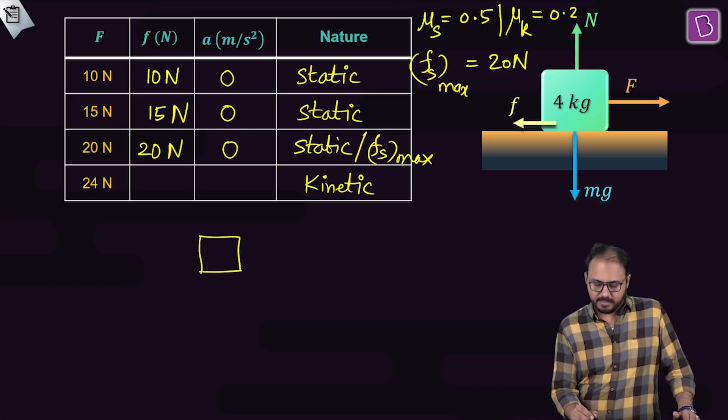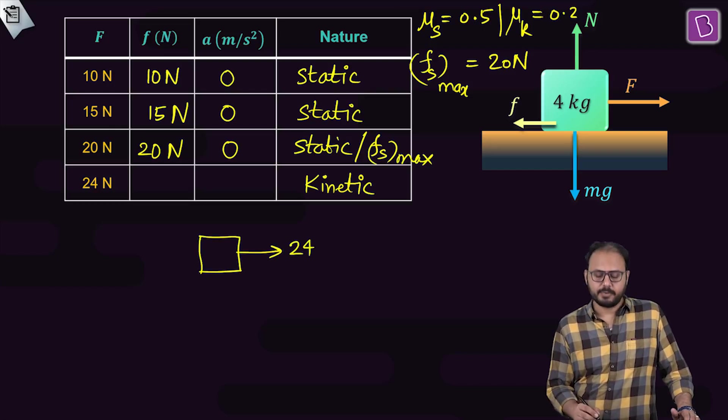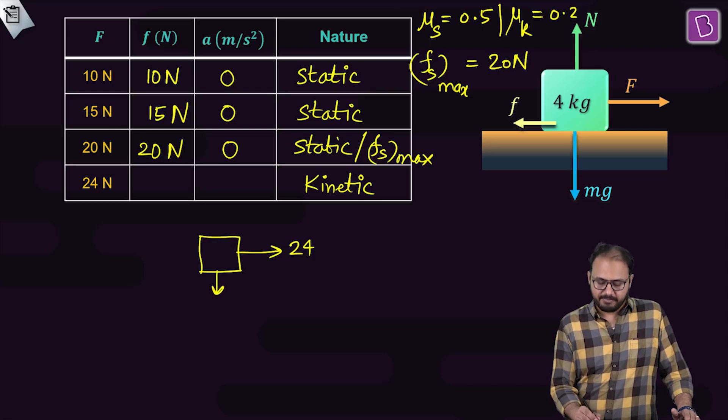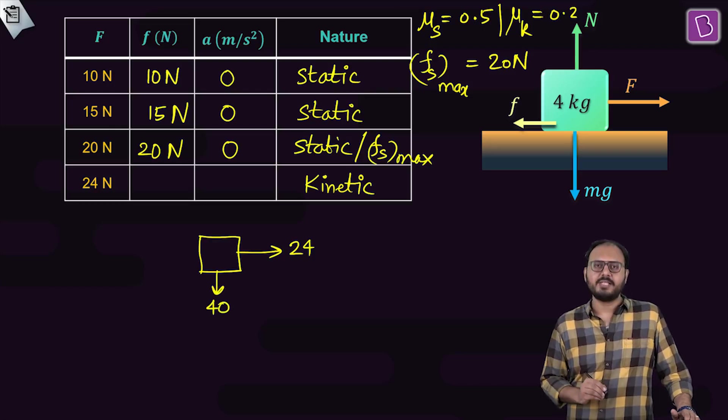Free body diagram. What is the force acting to the right? It is 24. What is the weight acting down? mg. If m is 4 and g is 10, can I say 40? Can I say normal reaction is acting up?